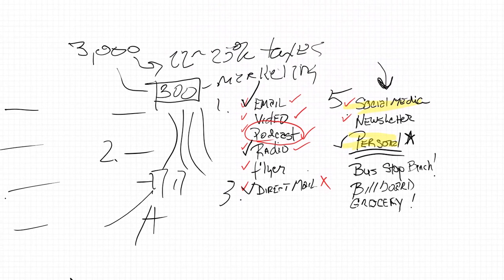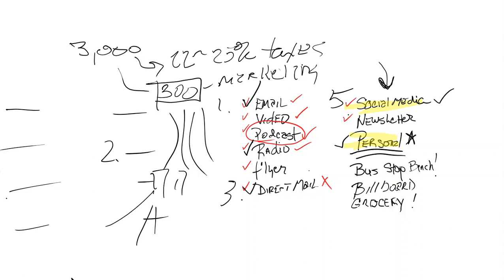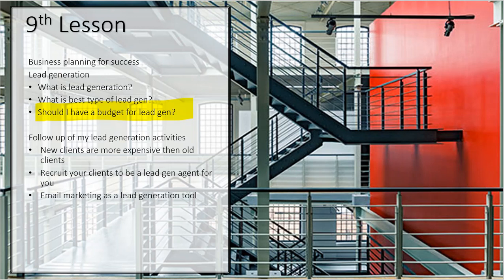That doesn't mean you can't add in some free things — I just wouldn't see social media as the be-all, end-all. I see new agents telling me, 'I do a lot of lead gen — I'm on Facebook, Twitter, and LinkedIn,' and those are all essentially the same thing. They serve different purposes, but virtually they all fall under social media. I sat down one day and came up with 109 different ways for lead generation. If you come to me with only four or five, you haven't put a lot of thought into it.